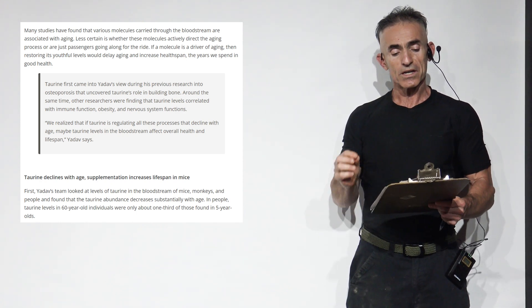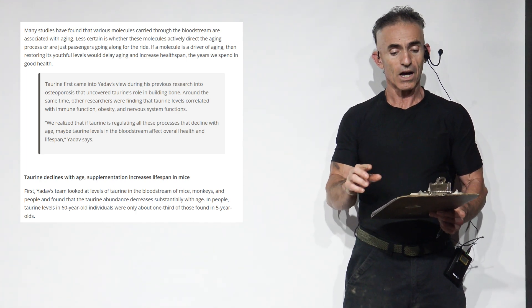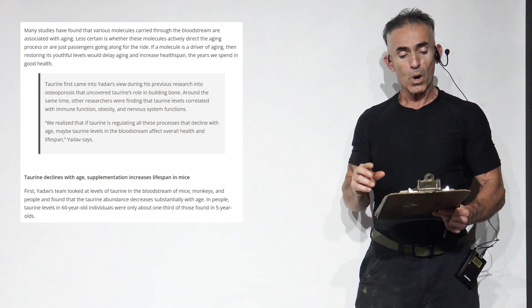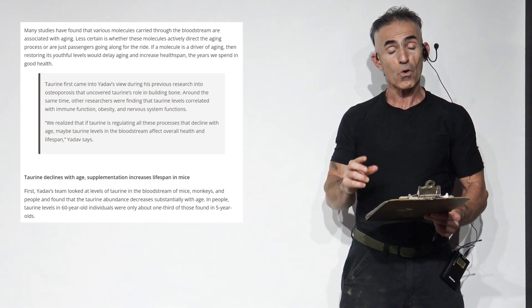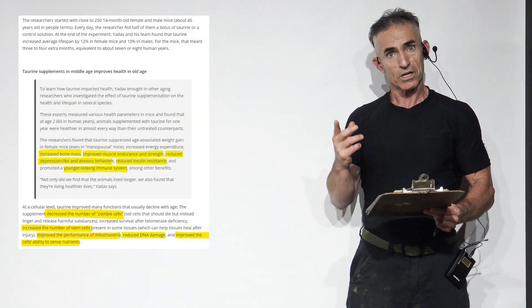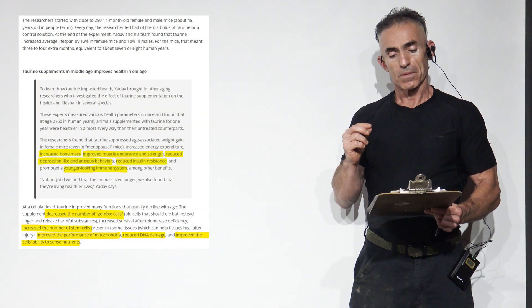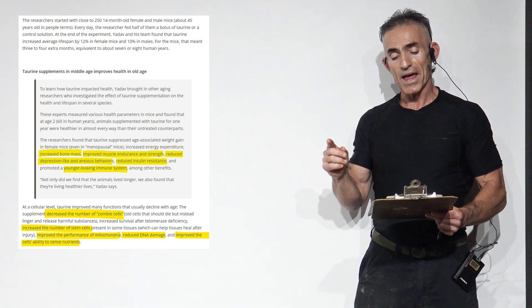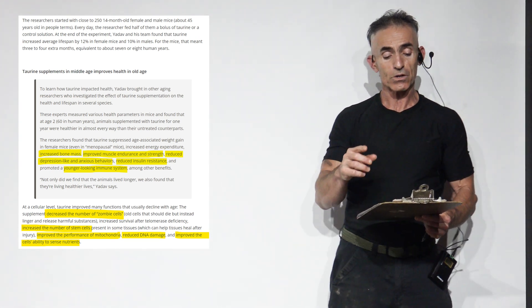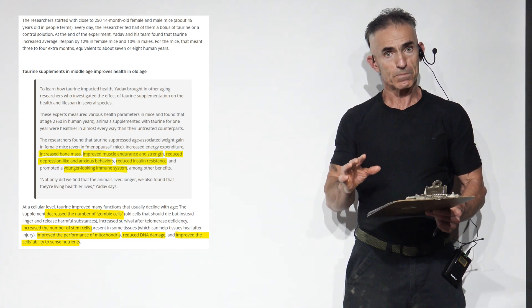We realized that if taurine is regulating all these processes that decline with age, maybe taurine levels in the bloodstream affect overall health and lifespan, quoting the lead researcher. To learn how taurine impacted health, the lead researcher brought in two other aging researchers who investigated the effect of taurine supplementation on health and lifespan in several species.